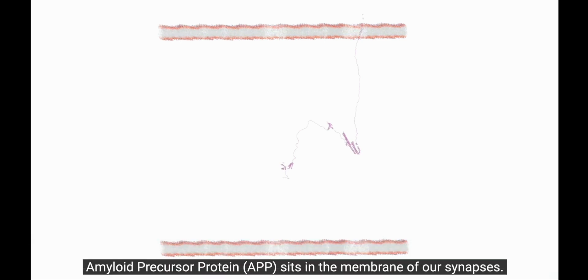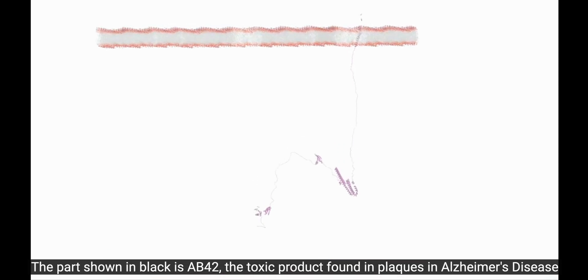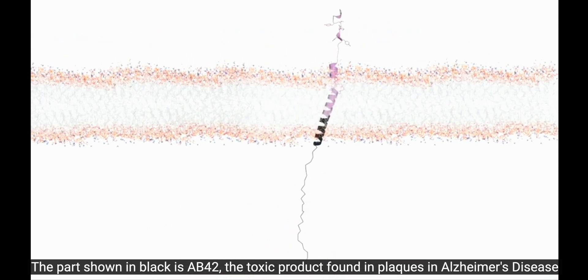Amyloid precursor protein sits in the membrane of our synapses. The part shown in black is AB42, the toxic product found in plaques in Alzheimer's disease.